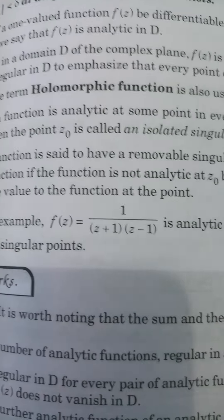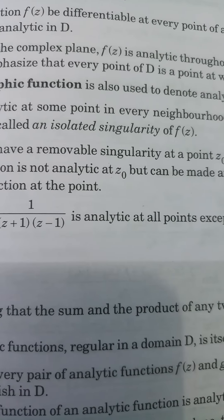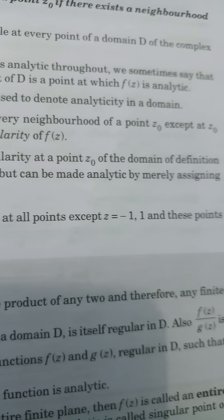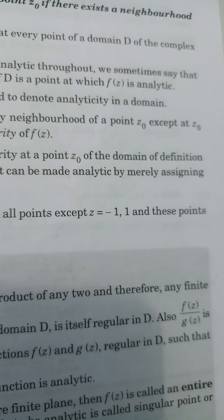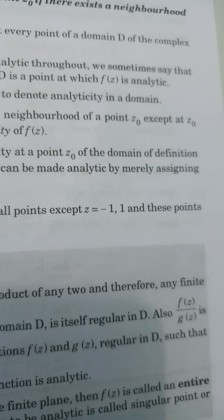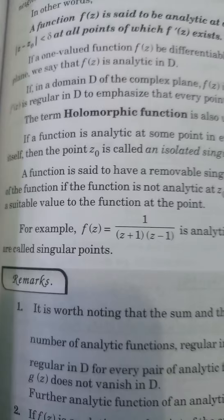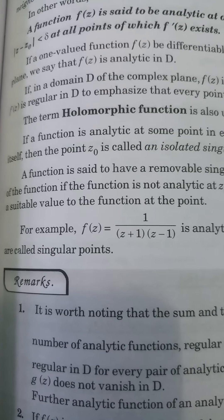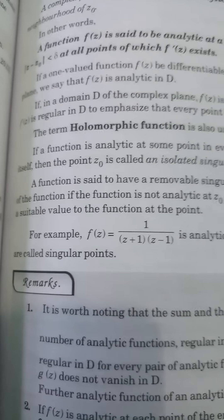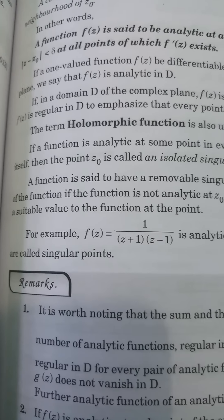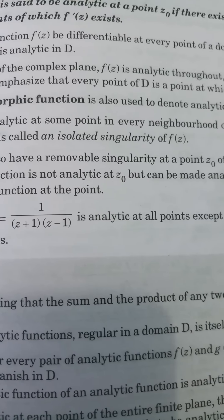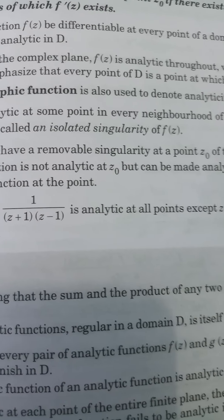If a function is analytic at some point in every neighborhood of a point z0, except at z0 itself, then the point z0 is called an isolated singularity of f(z).